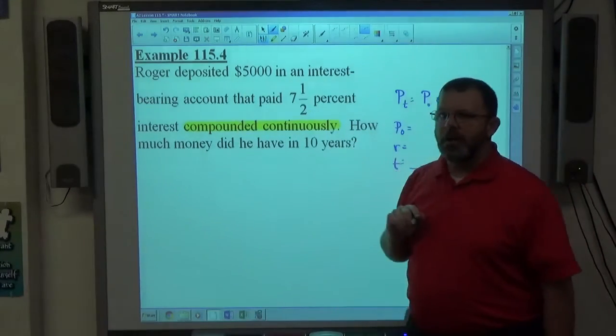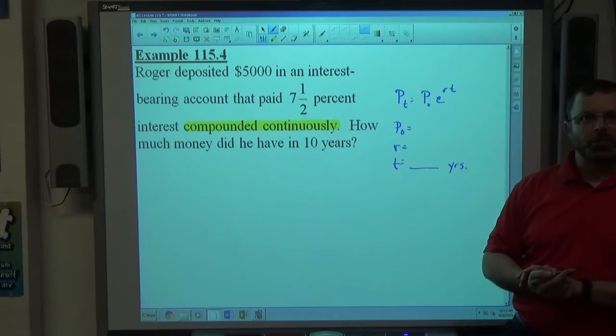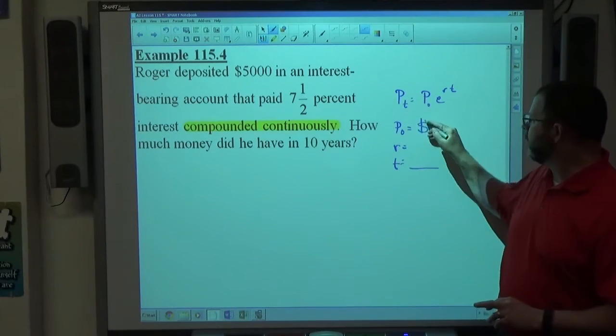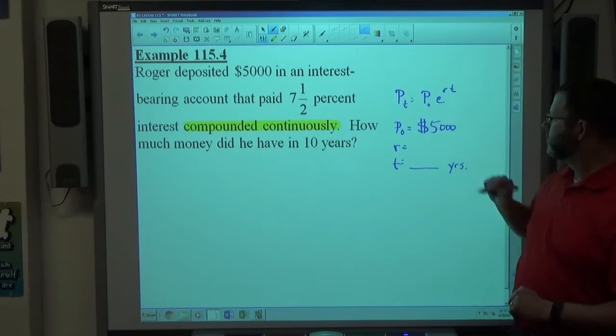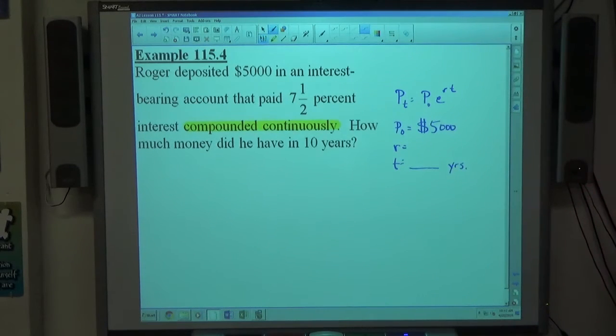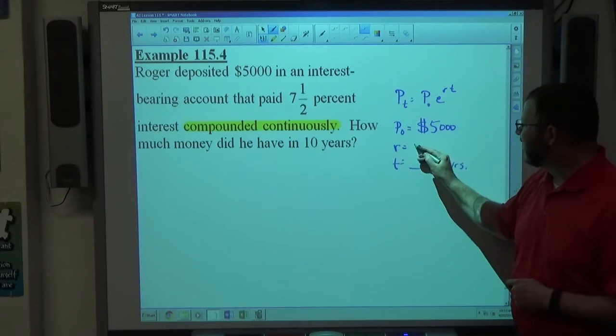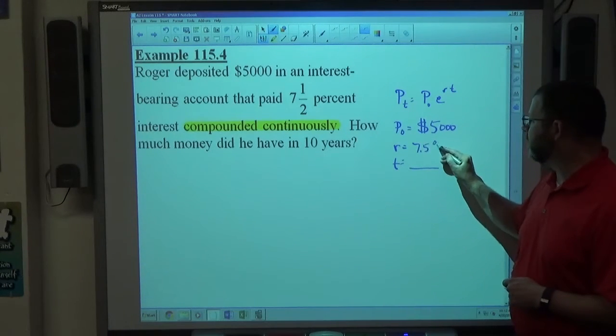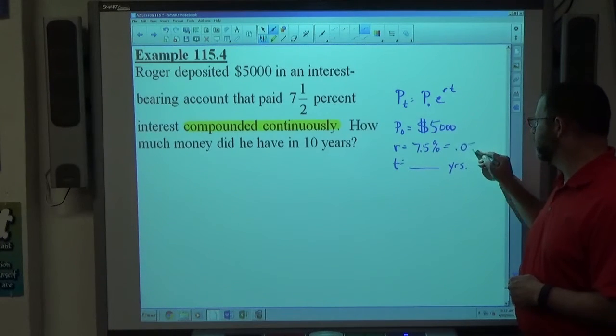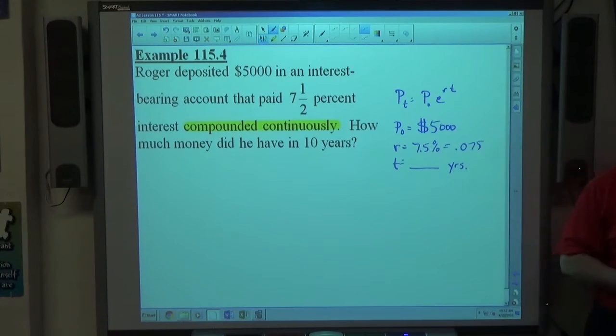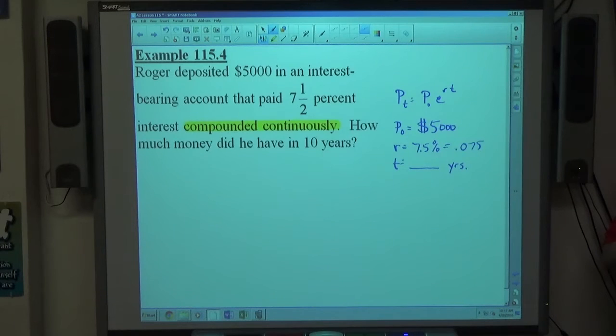So, first off, Roger deposited $5,000. What you deposit into the account is the initial principal. So how much money we started off with is $5,000. At an interest rate of 7.5%, okay, now pay close attention to this, 7.5% is equal to 0.075. So if you put 0.75 for 7.5%, that's 75%.